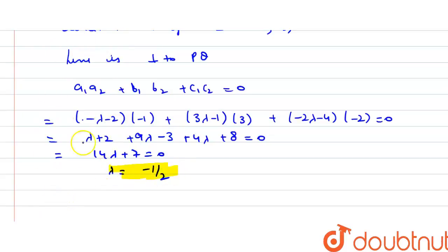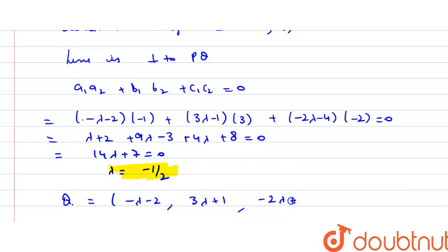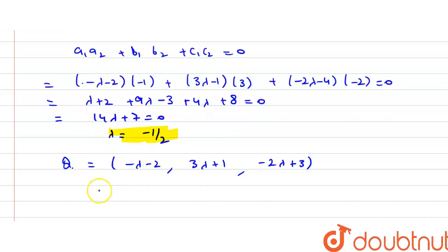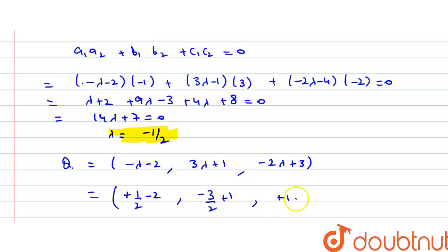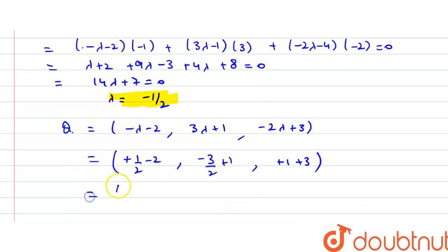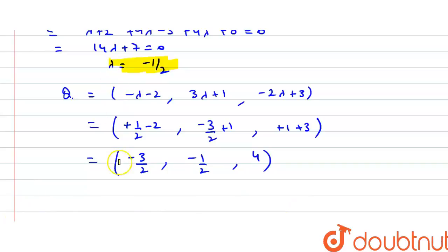Substituting lambda equals minus 1 by 2 into the coordinates of Q: x equals minus(minus 1/2) minus 2 = minus 3 by 2, y equals 3(minus 1/2) plus 1 = minus 1 by 2, z equals minus 2(minus 1/2) plus 3 = 4. So point Q is (minus 3/2, minus 1/2, 4). This is our answer.